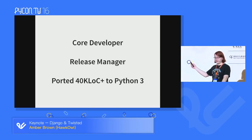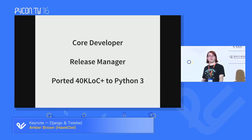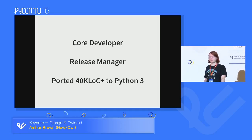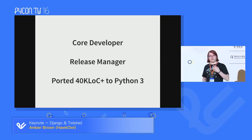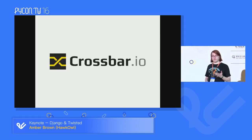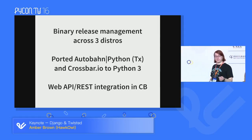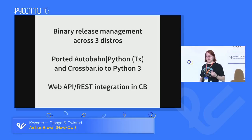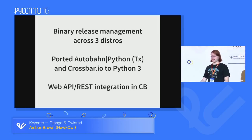I am the core developer, Release Manager, and a major Python 3 porter for the Twisted Project. The Twisted Project is an asynchronous framework that's been around since at least 2001. It works in Python 2 and Python 3 and lets you do asynchronous networking in your applications. My day job is at Crossbar.io, where I do binary release management and I ported Autobahn and Crossbar.io to Python 3. I'm also in charge of Web API and REST integration in Crossbar.